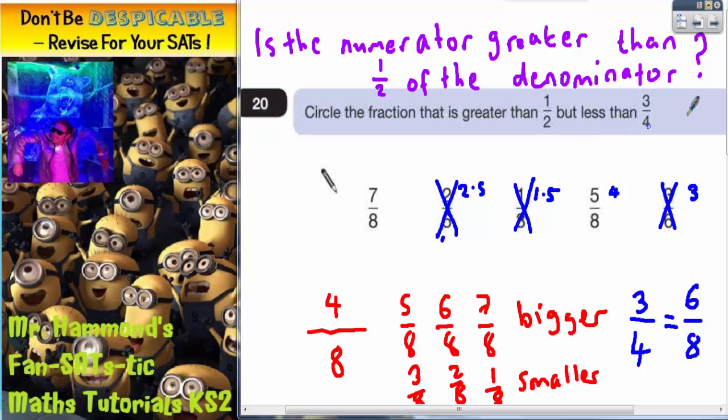So which of these two is less than six eighths? Well, seven eighths can't be that because seven is bigger than six. So seven eighths is bigger than six eighths. So that one's got to go. So the only one that's less than six eighths is five eighths. And that's the only one left. So that is the one that we need to circle. So the answer is five eighths.